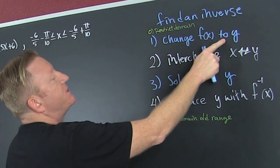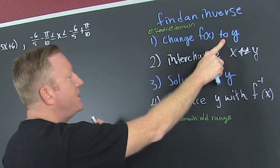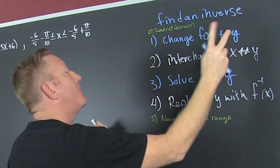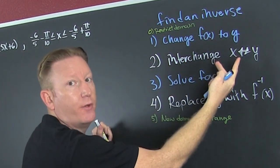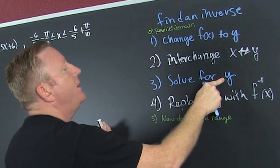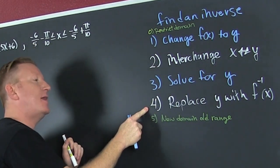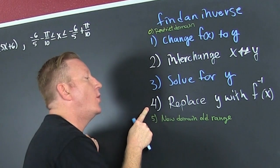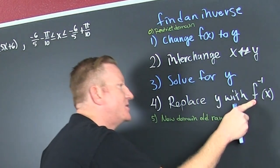Step one: change f of x to y, because it's easier on the eye. Step two: interchange x and y — that's the important part. Step three: solve for y. And step four — that step you're going to forget — replace y with f inverse of x.